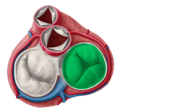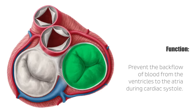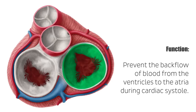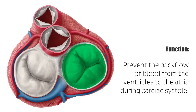The valves of the heart control the blood flow in and out of the heart. Specifically, the atrioventricular valves function to prevent the backflow of blood from the ventricles to the atria during cardiac systole. Opening and closing of the valves is governed by the gradient pressure across the valves themselves, and the first heart sound can be heard when the atrioventricular valves close. When you hear the classic lub-dub sound the heart makes, the tricuspid valve is contributing to the lub sound.